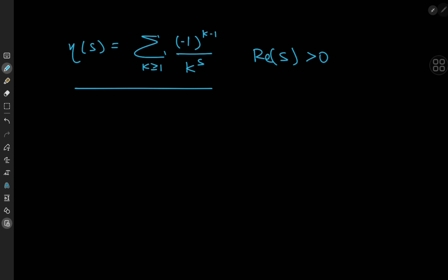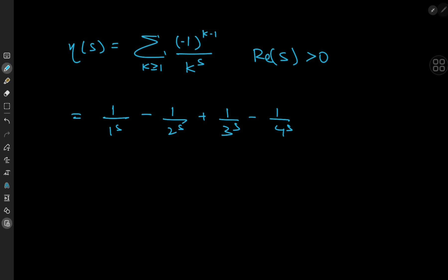Expanding the infinite series on the right-hand side, we can write this as 1/1^s minus 1/2^s plus 1/3^s minus 1/4^s, and so on. We can also write this as 1^(−s) minus 2^(−s) plus 3^(−s) minus 4^(−s), and so on.